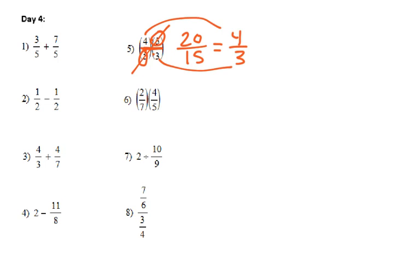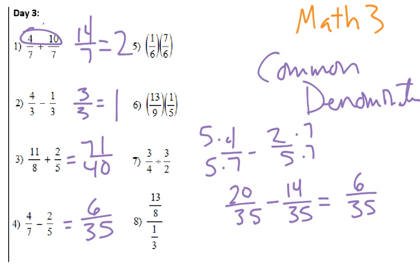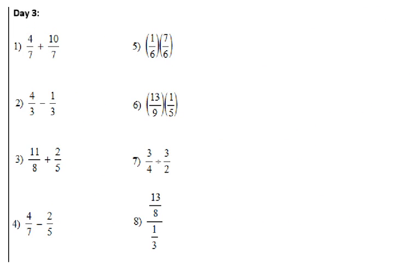Number 6, you can't do that, so you just have to go across. So if we're looking at 5 and 6 here, 1 times 7 is 7, 6 times 6 is 36, got to leave it that way. There's none of that crossing out we can do. Number 6, 13 times 1 is 13, 9 times 5 is 45, and I don't think there's anything we can reduce there.